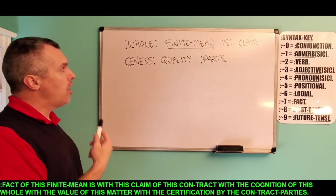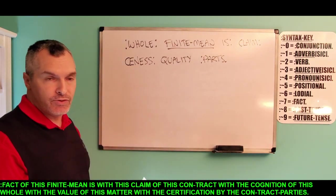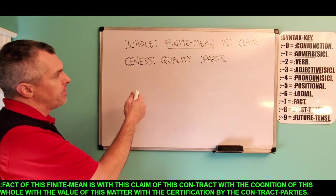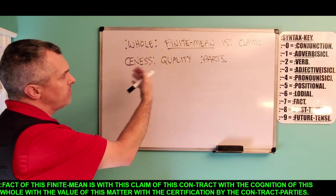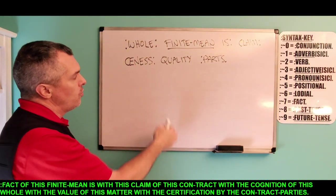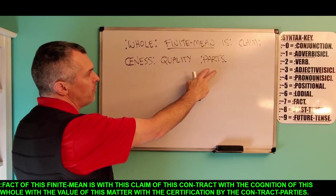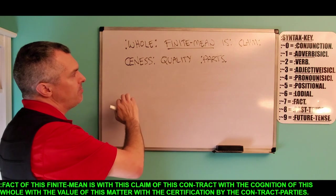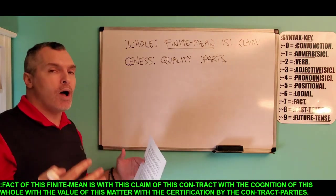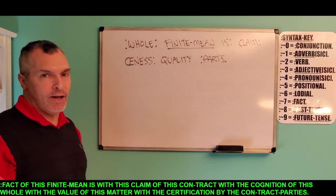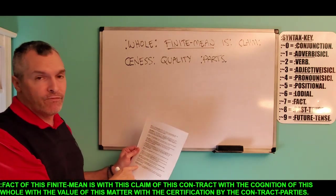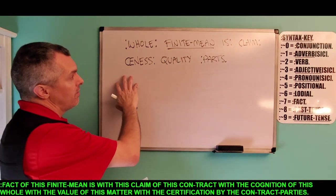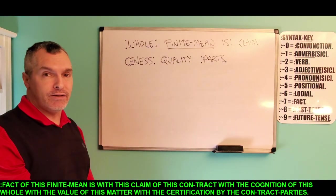The next fact is 'whole.' For the whole of the finite meaning is with the claim of the oneness, with the quality by the parts. The oneness is concerned with this claim of the finite meaning — the closure of the whole — with the quality possessing the oneness with the authority by the parts. Backwards: for the parts of the quality are with the oneness of the claim, with the finite meaning by the whole. All of these finite means which make up the facts of the finite mean of the word 'fact' are parts of the whole.